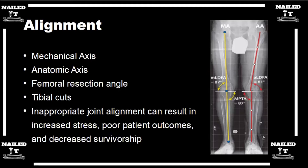Not everyone's center of the femoral head is in the same location — someone may have it at five degrees, someone at seven degrees. This is where GPS, navigation, or robotics can come into play. The system moves the leg in a circle, finds the center of the hip, and dials in the mechanical axis. On average, we're normally cutting the distal femur at about five degrees off the anatomic axis to line up with the center of the femoral head.